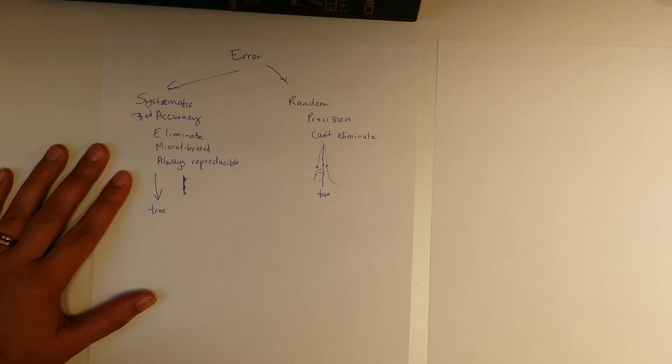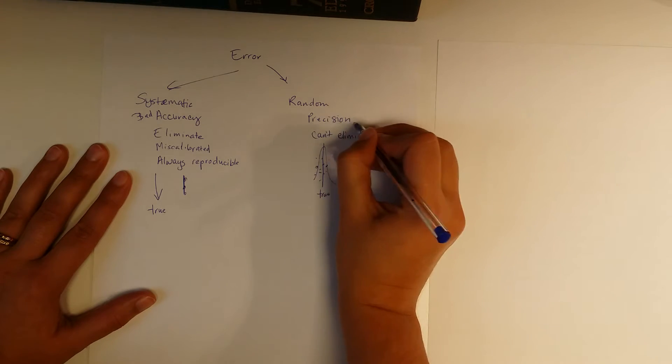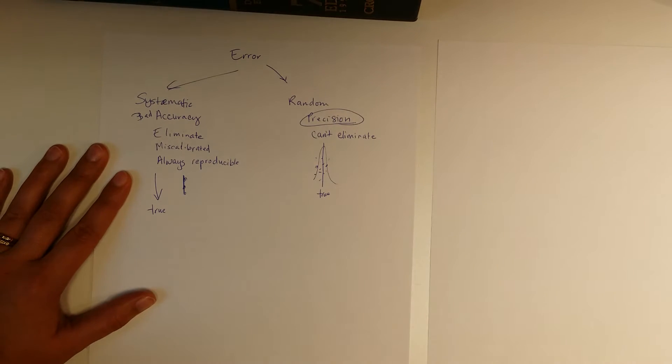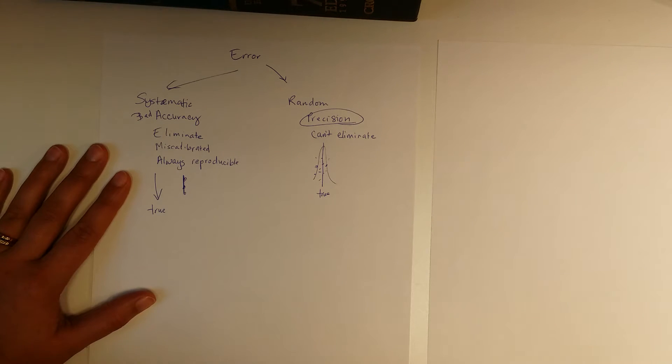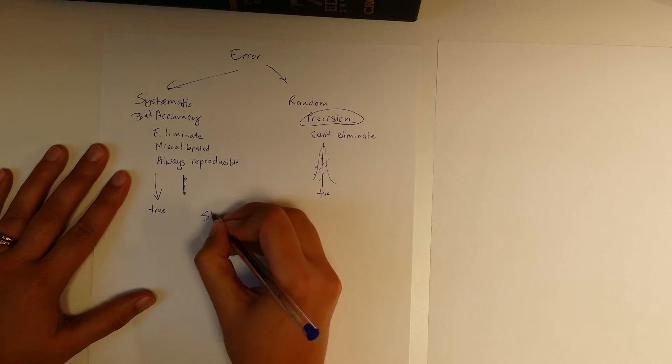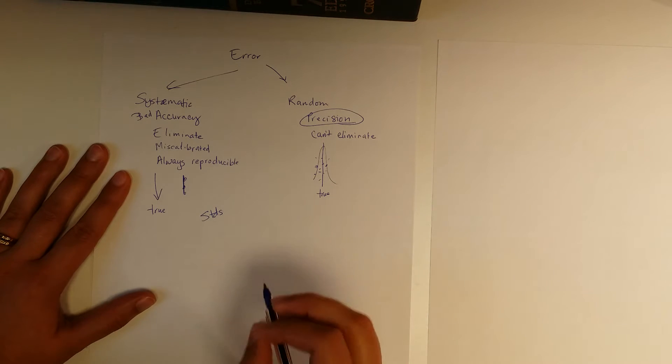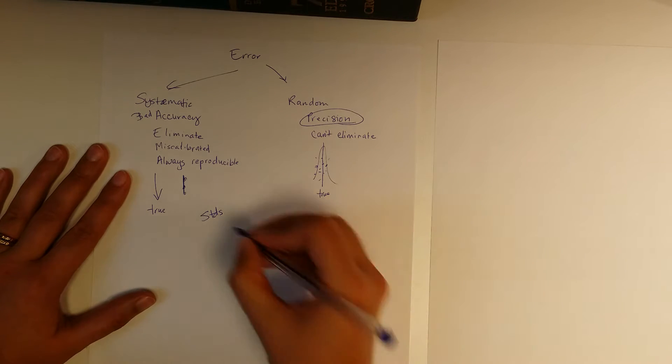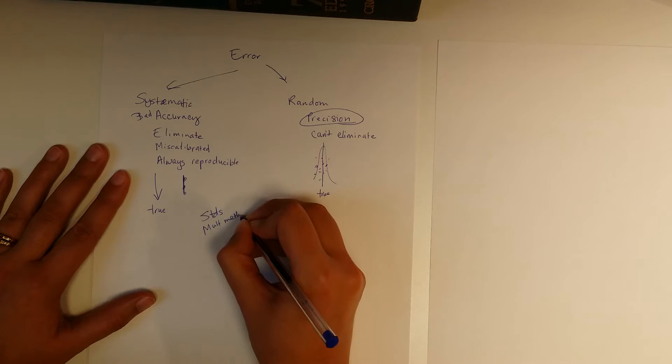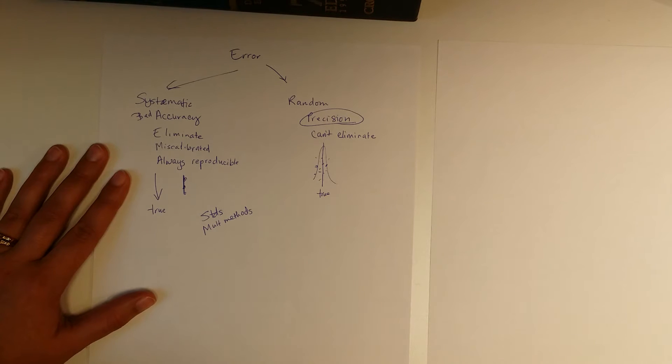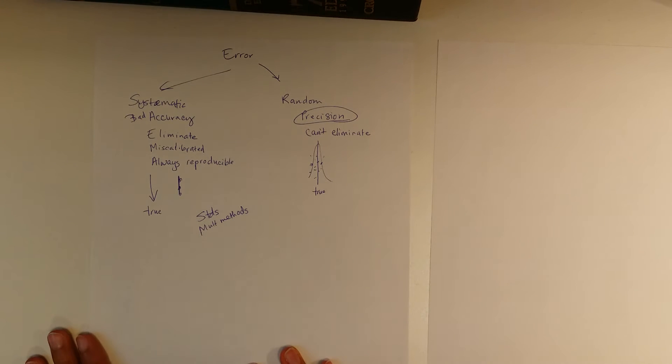Now when we talk about error propagation, which is where most of the questions come into with this topic, usually what we're talking about is precision. We assume that any kind of issues with accuracy have been gotten rid of. And there are a lot of ways that you can do that. You can get rid of accuracy using standards. You can ensure your accuracy and get rid of systematic error using standards. You can do multiple methods. This is all of our method validation work for chapter 5. But right now let's stick to chapter 3.